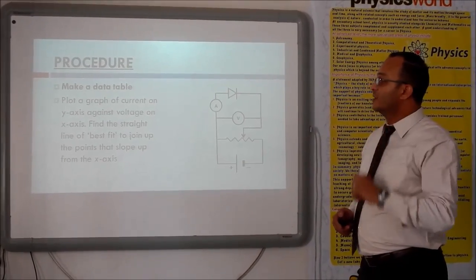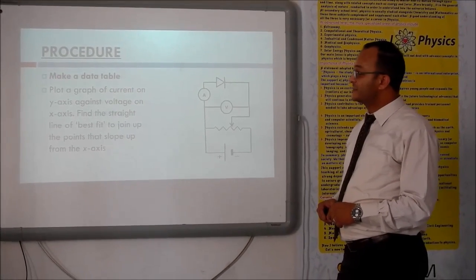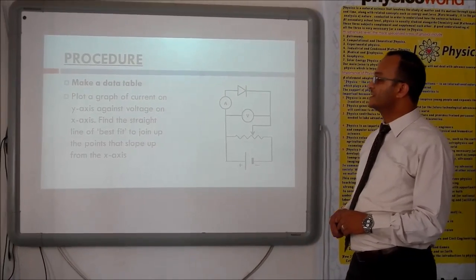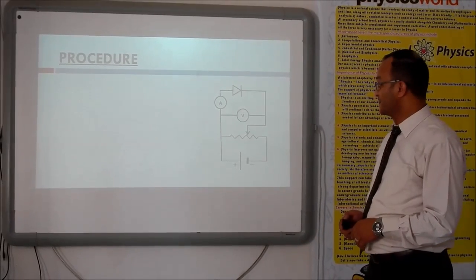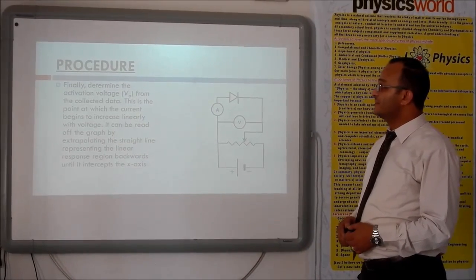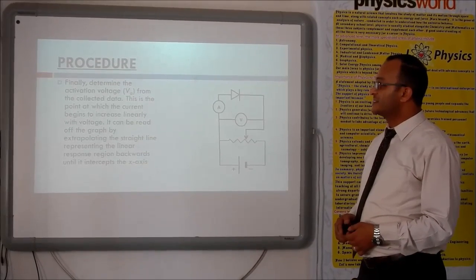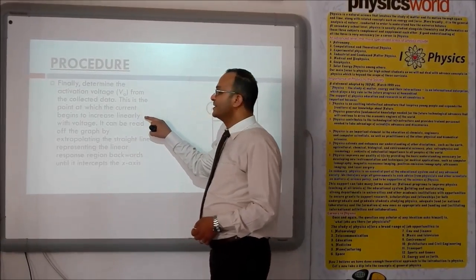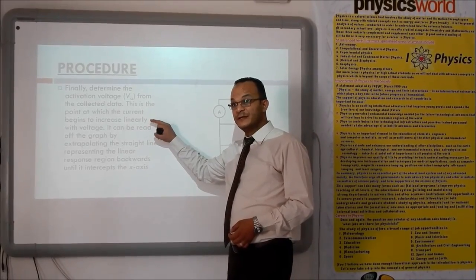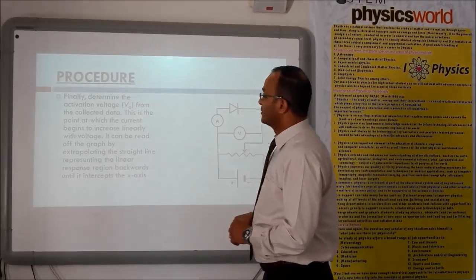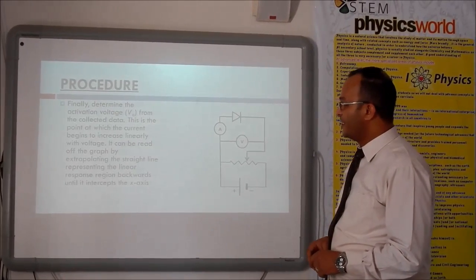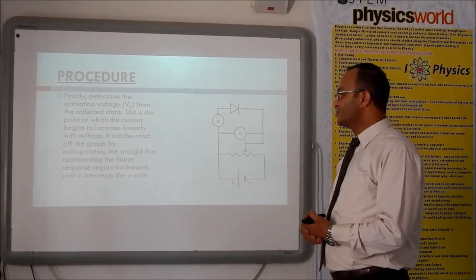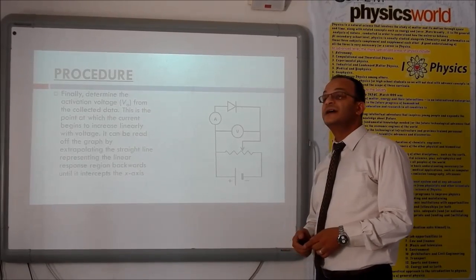Make a data table. Plot a graph of current on the y-axis against voltage on the x-axis. Find the straight line of best fit to join up the points that slope up from the x-axis. Finally, determine the activation voltage from the collected data. This is the point at which the current begins to increase linearly with voltage. It can be read off the graph by extrapolating the straight line representing the linear response region backwards until it intercepts with the x-axis.